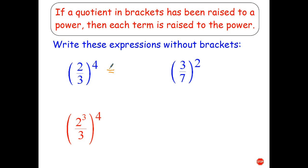So the first question. Two-thirds all to the power of 4. Well that's just going to become 2 to the power of 4 over 3 to the power of 4.